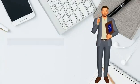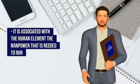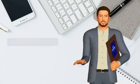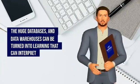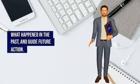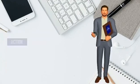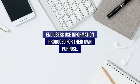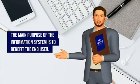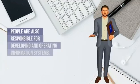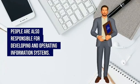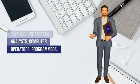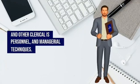5. Human Resources and Procedures. This component is associated with the human element — the manpower needed to run and manage the system — and the procedures to follow so that knowledge in the huge databases and data warehouses can be turned into learning that interprets what happened in the past and guides future action. People are the end users of the information system, using information produced for their own purpose. People are also responsible for developing and operating information systems, including systems analysts, computer operators, programmers, and other clerical and managerial personnel.